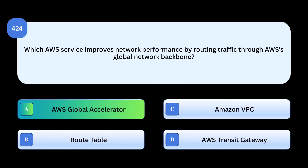Correct answer: AWS Global Accelerator. AWS Global Accelerator routes user traffic through AWS's global network for improved speed, latency, and availability. Why others are incorrect: Route Table manages routing inside a VPC, not global acceleration. Amazon VPC creates isolated networks, not performance optimization. AWS Transit Gateway connects VPCs, not global traffic acceleration.